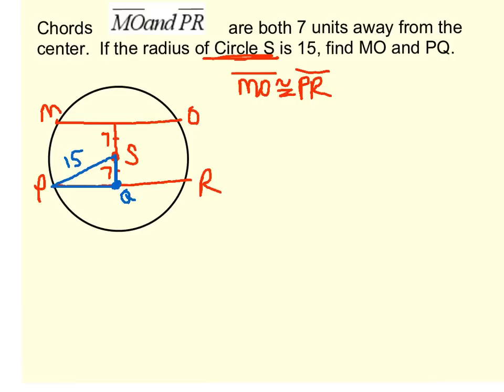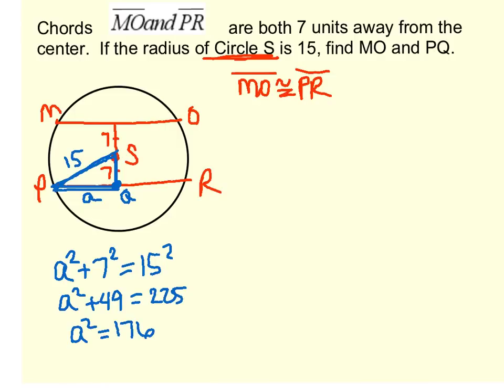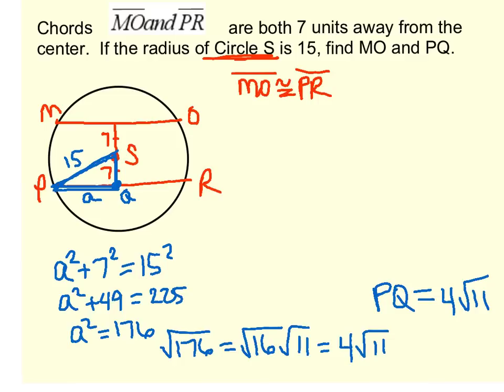Because now I know this is 7, this is 15, this is a right triangle. So to find PQ, I'll just label that A, I can use Pythagorean theorem. A squared plus 7 squared equals 15 squared. Let's go ahead and solve this. A squared plus 49 equals 225. Subtract the 49, we get A squared equals 176. And 176 is not a perfect square, so we're going to have to go ahead and simplify. So if we simplify root 176, we can simplify into root 16 times root 11, which is 4 root 11. So that means we have found PQ, which is one of the things we wanted, and that's 4 root 11.